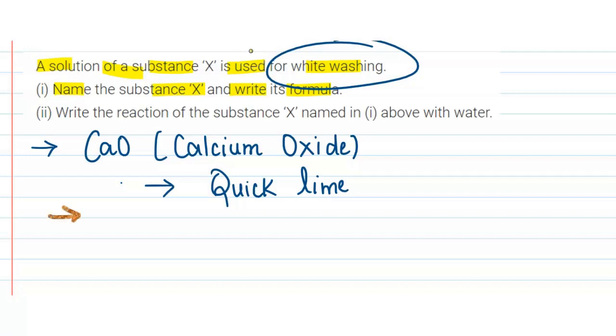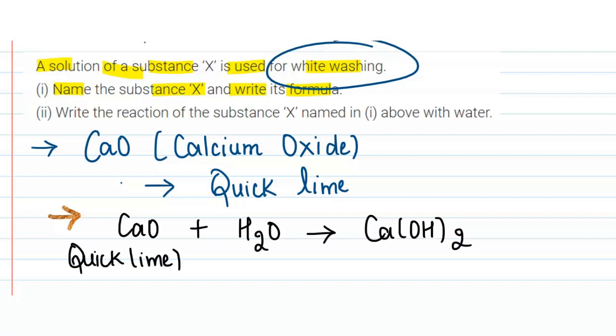So this is our quick lime, and calcium hydroxide that is known as slaked lime. So when quick lime reacts with water it forms slaked lime. So this is our answer, thank you.